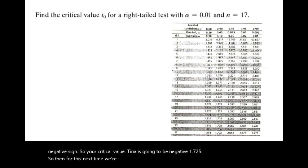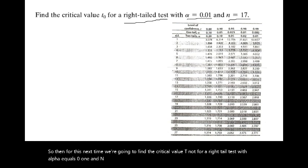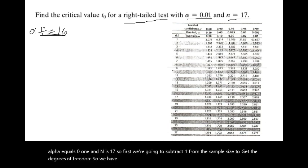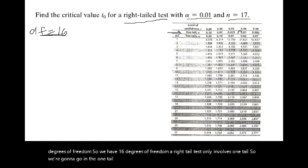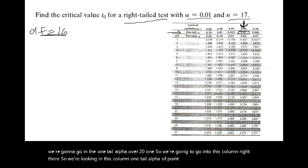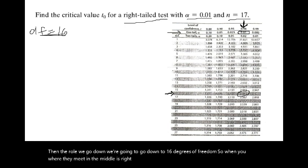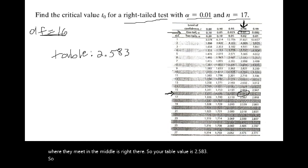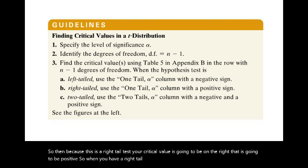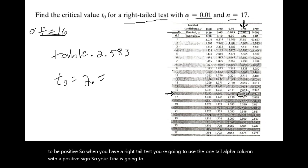For this next one, we find the critical value t-naught for a right tail test with alpha equals 0.01 and n equals 17. Degrees of freedom is 16. A right tail test only involves one tail, so go into the one tail alpha 0.01 column and down to 16 degrees of freedom. The table value is 2.583. Because this is a right tail test, your critical value is positive, so t-naught is positive 2.583.